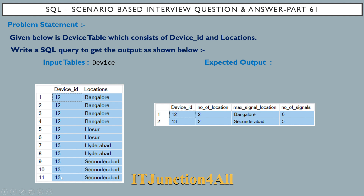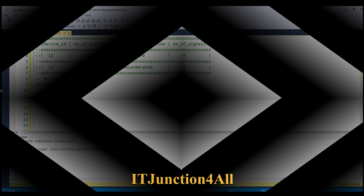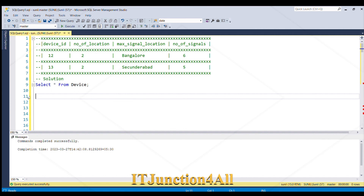The last column is number of signals — it is the total number of location records within that device_id. For device_id 12, Bangalore appears 4 times plus Hosur 2 times, so 4 plus 2 equals 6. For device_id 13, Hyderabad appears 2 times and Secunderabad 3 times, so 3 plus 2 equals 5. This is what is expected in the output table.